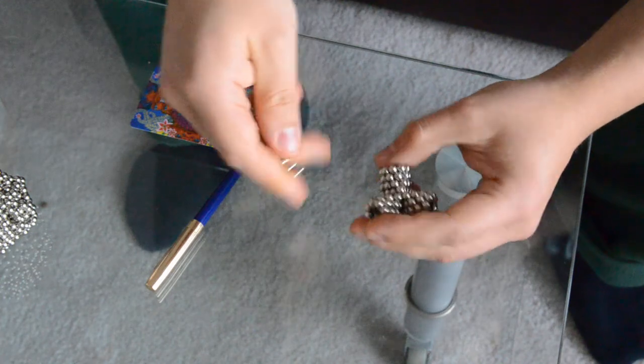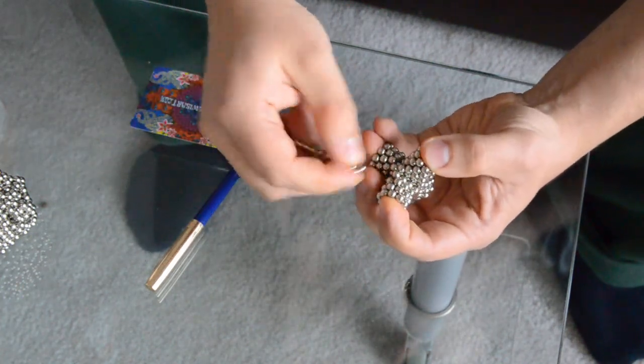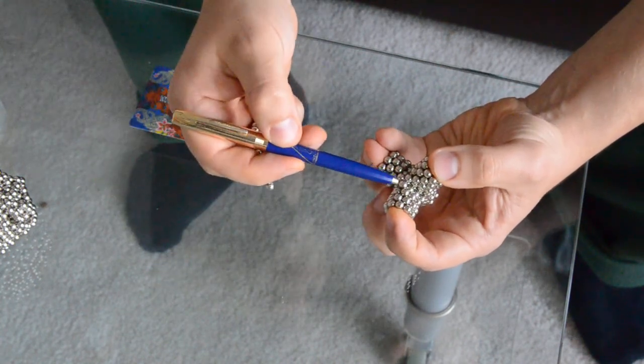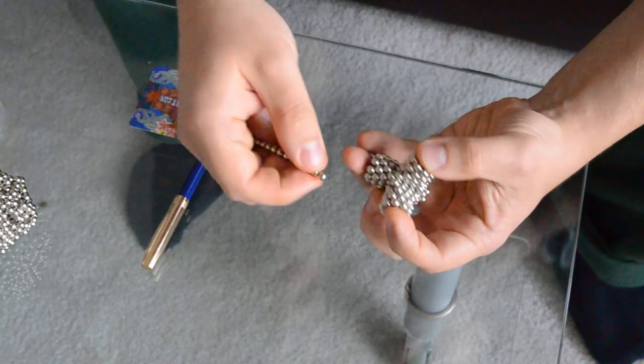Okay, now take your ring, take your string of magnets here, and what we're going to do is we're going to add magnets here, here, and here. So it looks like this.